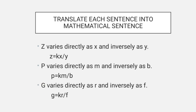Translate each sentence into a mathematical sentence. Z varies directly as X and inversely as Y: Z equals K times X over Y. P varies directly as M and inversely as B: P equals K times M over B. G varies directly as R and inversely as F: G equals K times R over F.